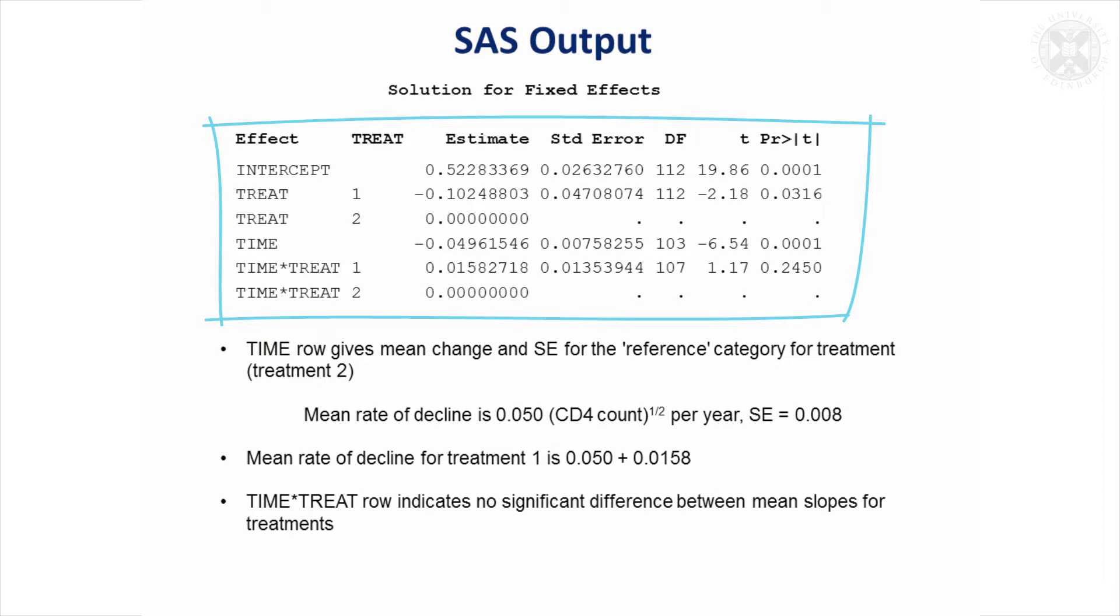And by fitting the interaction, you can see if the slopes are different between your groups. Also get the overall slope.